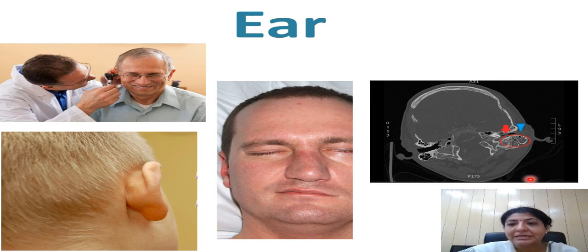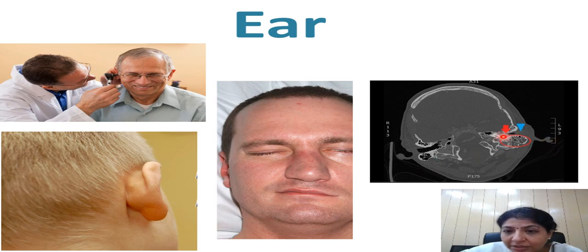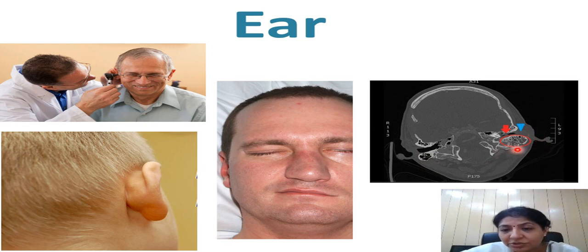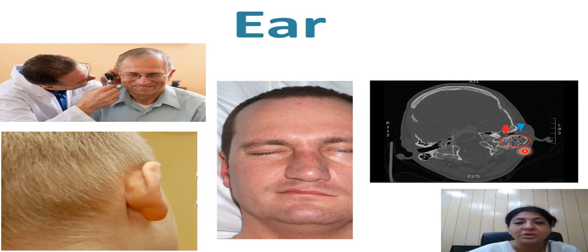The CT scan shows a ruptured tympanic membrane and loss of ossicles due to the chronicity of his infection. Importantly, looking at the mastoid — on the right side the air cells are very nicely defined, but on the left side there is opacity in it and the air cells appear opaque, indicating infection has spread backwards towards the mastoid process.